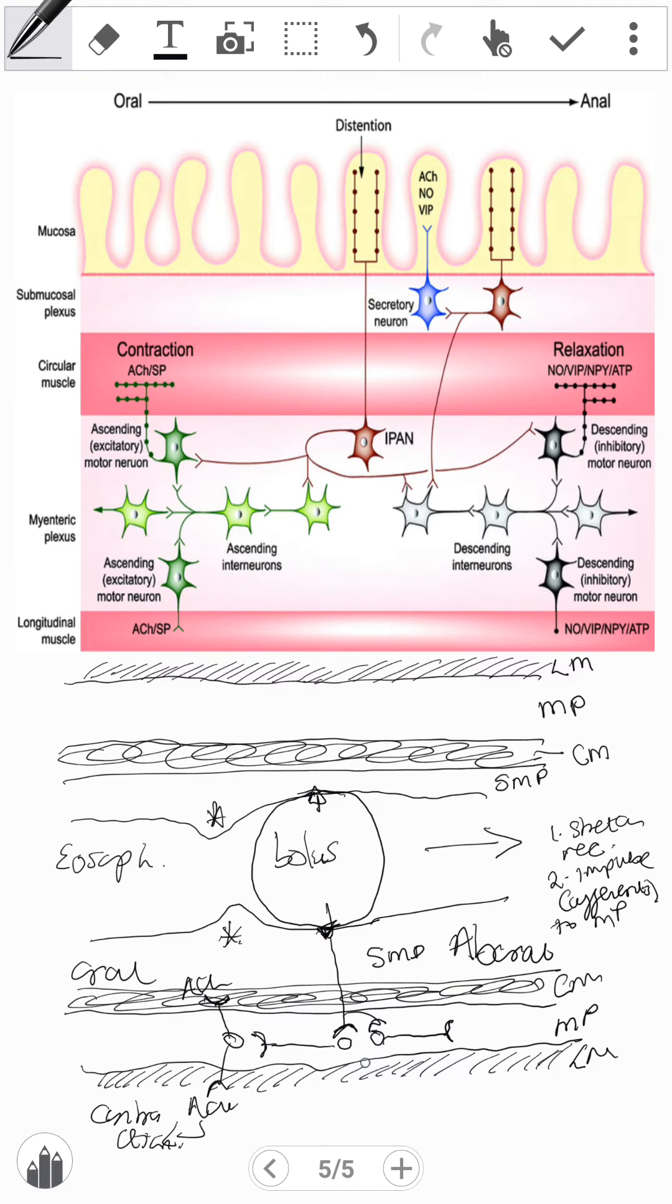we have some inhibitory neurons. Now these inhibitory interneurons secrete inhibitory neurotransmitters that include nitric oxide,